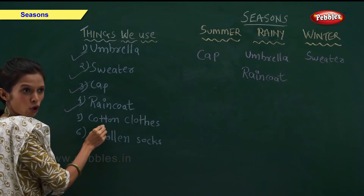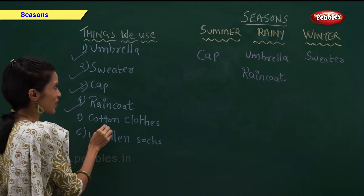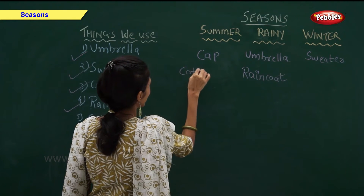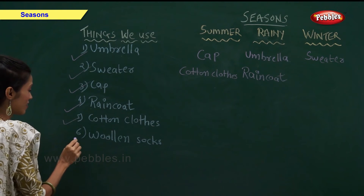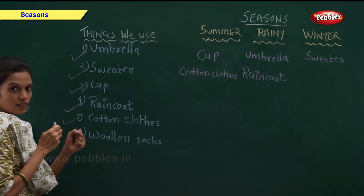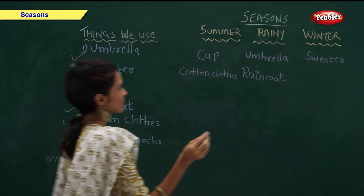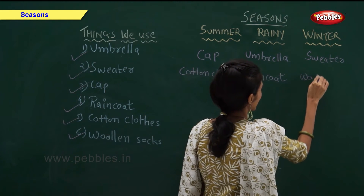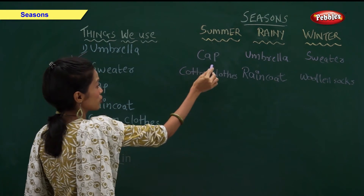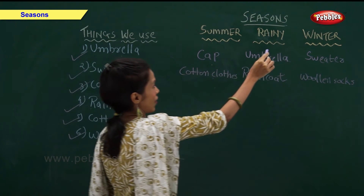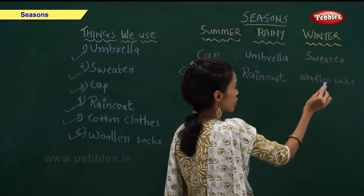When do we use cotton clothes? Yes, in summer we use cotton clothes. And in winter we use woolen socks. So, in summer we use cap and cotton clothes. In rainy season we use umbrella and raincoat. And in winter we use sweater and woolen socks.